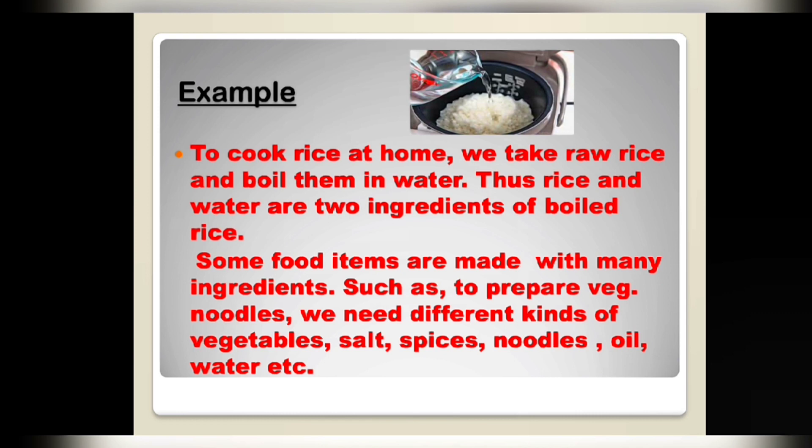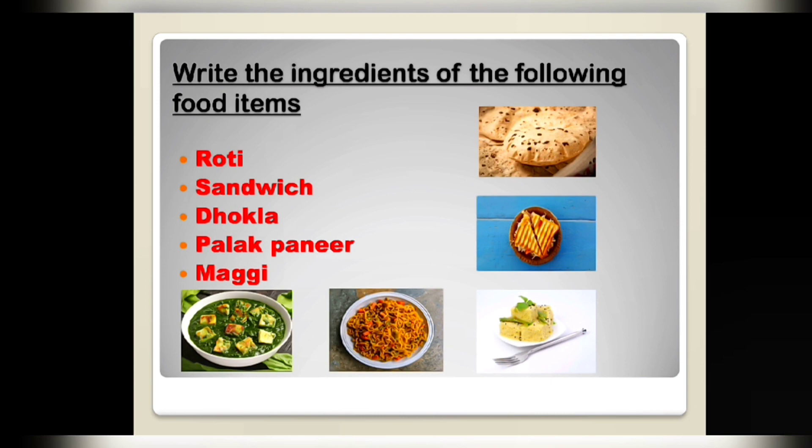For example, to cook rice at home, we take raw rice and boil it in water. Thus, rice and water are two ingredients for boiled rice. Some food items are made with many ingredients — for example, to prepare veg noodles, we need different kinds of vegetables like onion, beans, cabbage, etc., different types of spices, noodles, oil, water, etc.